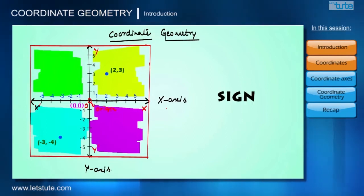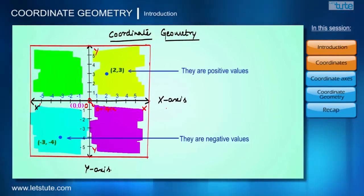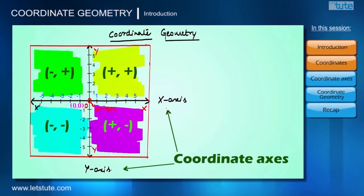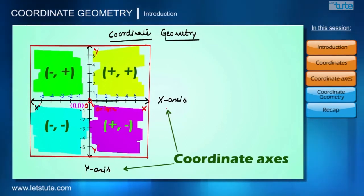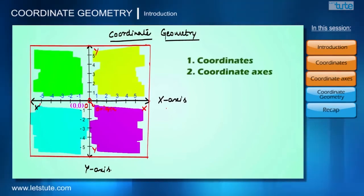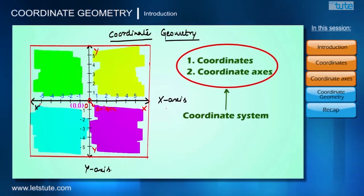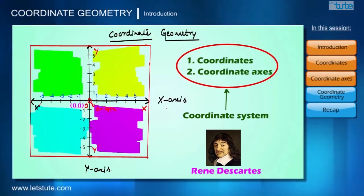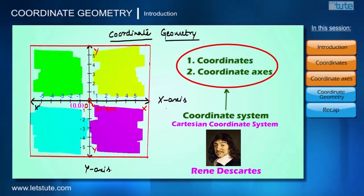The sign of the coordinates depends on the quadrant in which they exist. These two reference axes — the x-axis and y-axis — are called coordinate axes. This whole system is called the coordinate system, and it was given by the great French mathematician René Descartes.